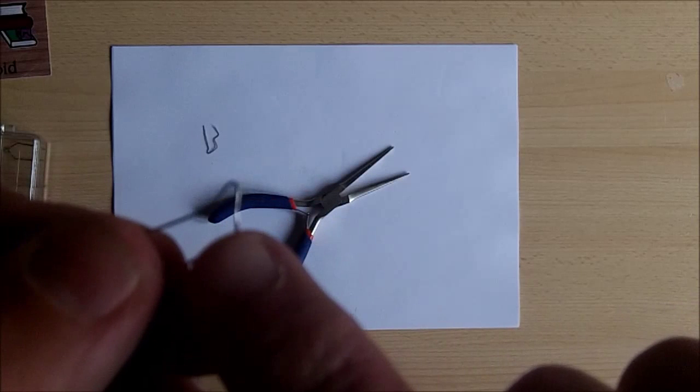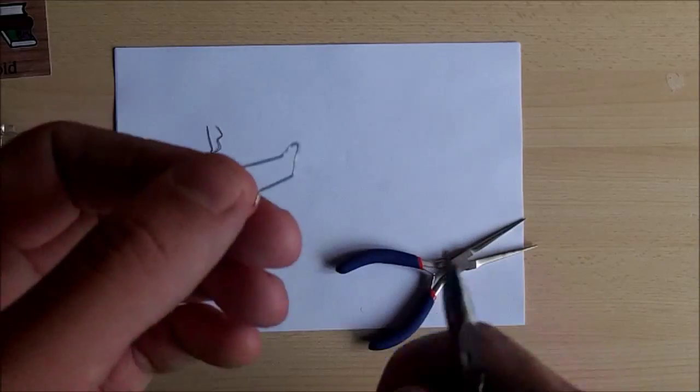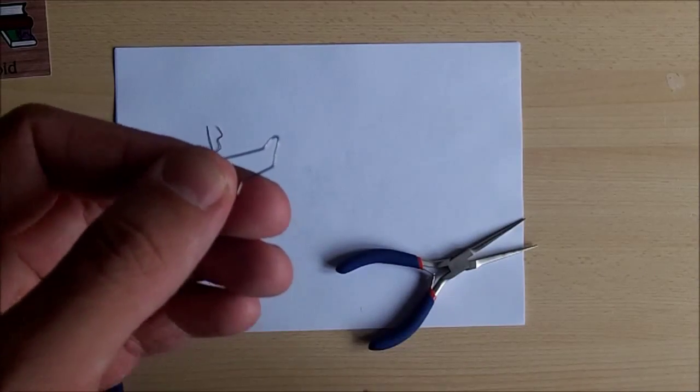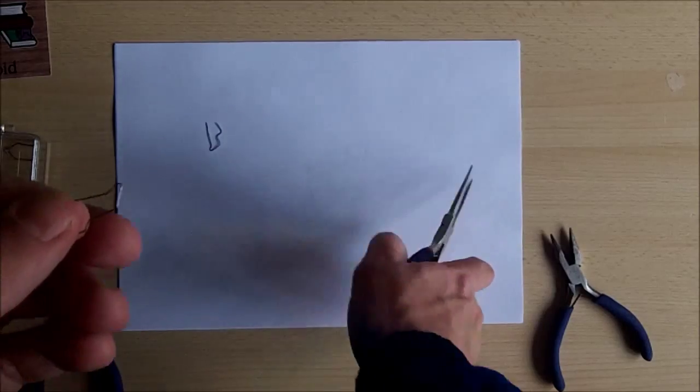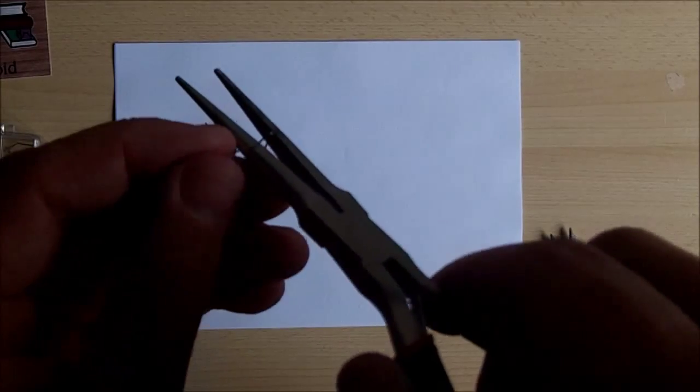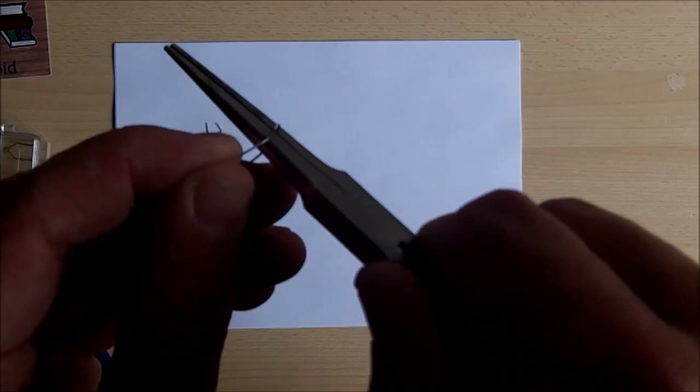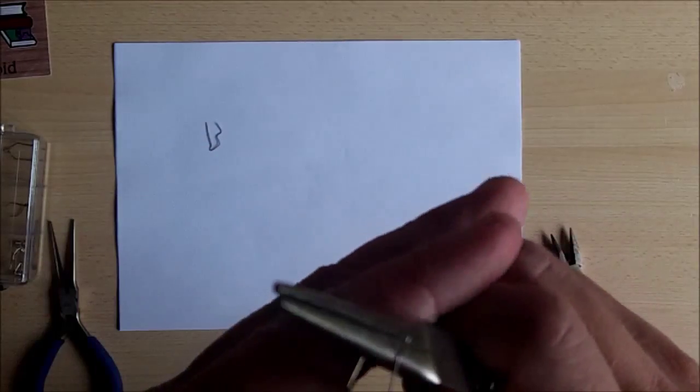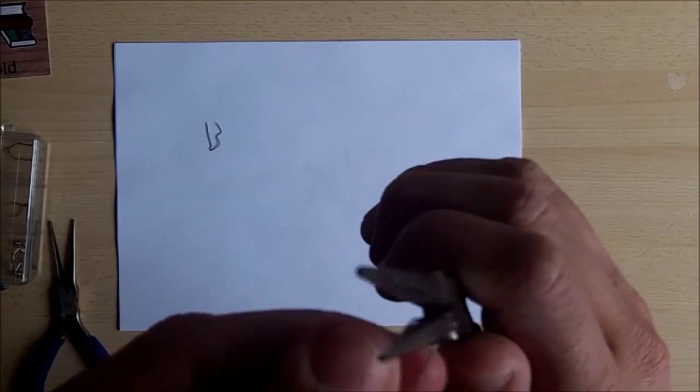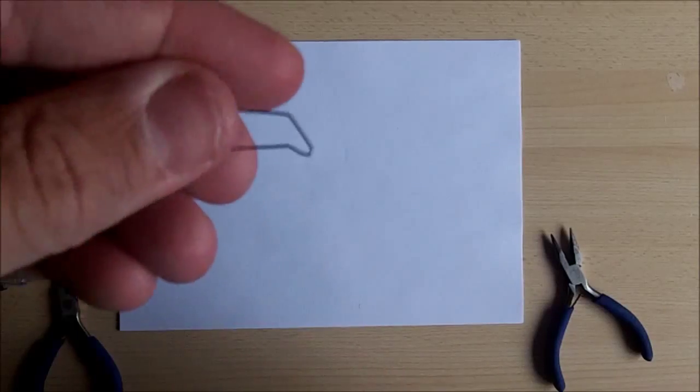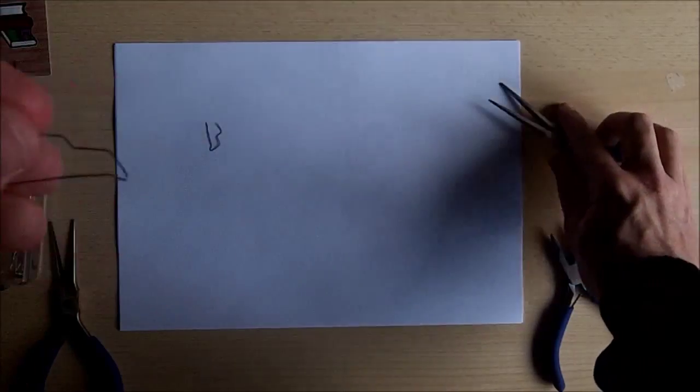If this bit here isn't flat anymore, if this line isn't flat anymore on the bottom, easy way to deal with that. Take your needle nose pliers, slide them in, and squeeze. Easy as that, and it's flat on the bottom again.